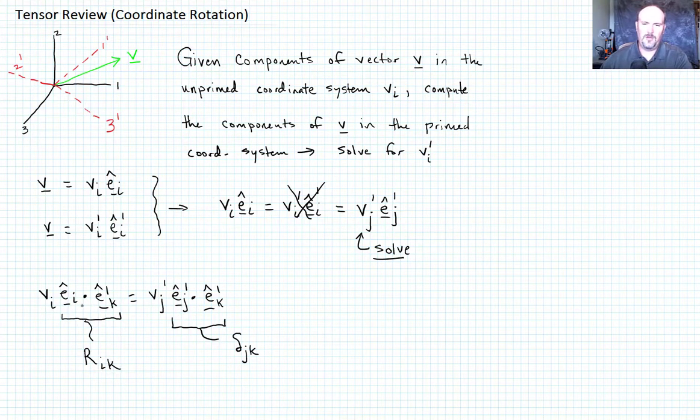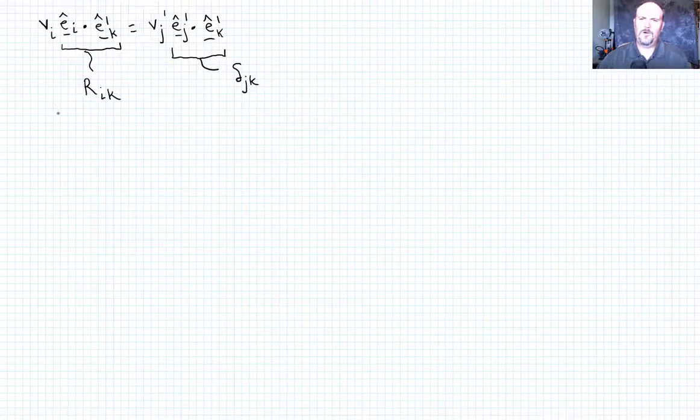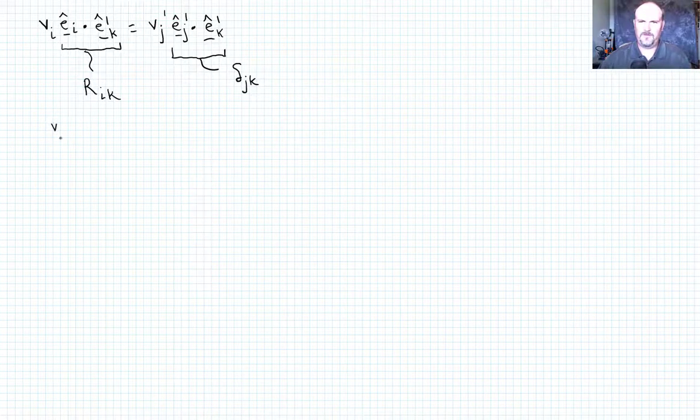So I can go through and take, I could represent this as a three by three matrix. And it turns out, this is actually the rotation matrix. Okay, so let's go ahead and write that out, without all the other junk.